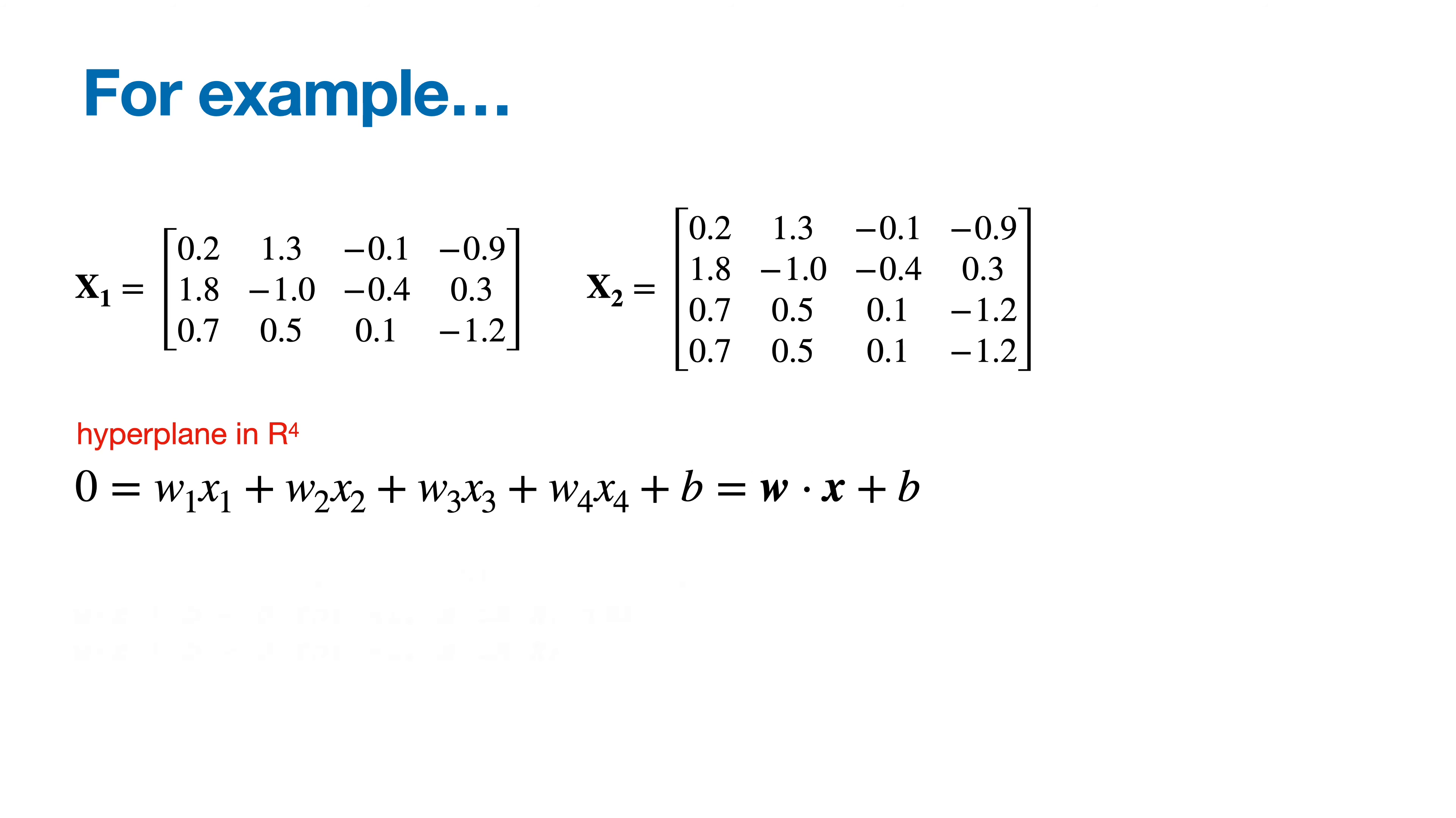For example, if we're in R^4, then x1 might represent this set of points, and x2 might represent this set of points. Looking at the equation for a hyperplane in R^4, the question is, can you come up with a set of weights w and an offset b such that plug in every point from x1 and you'll get back a value less than 0, and plug in every point from x2 and you'll get back a value greater than 0? If there exists a set of weights and an offset that do that, then x1 and x2 are linearly separable, otherwise they're not.